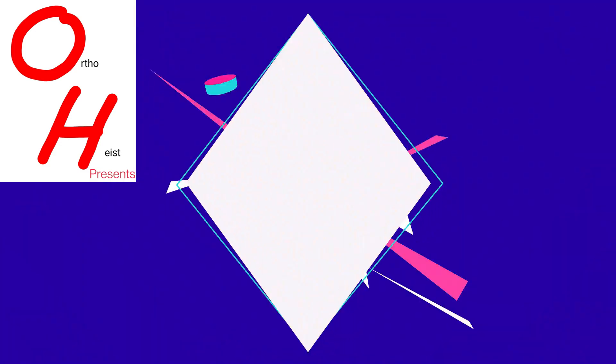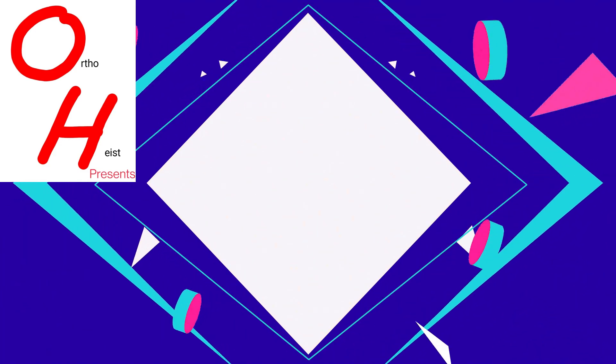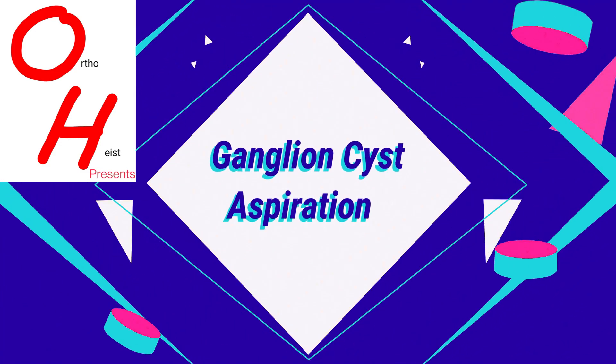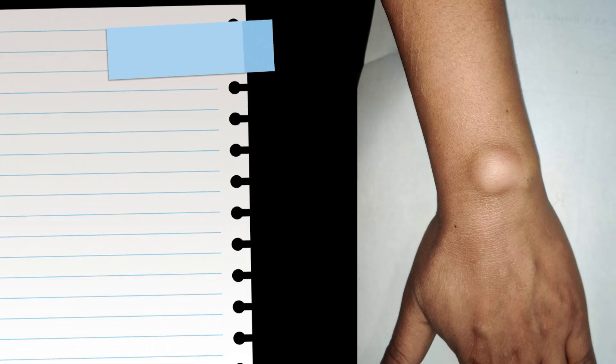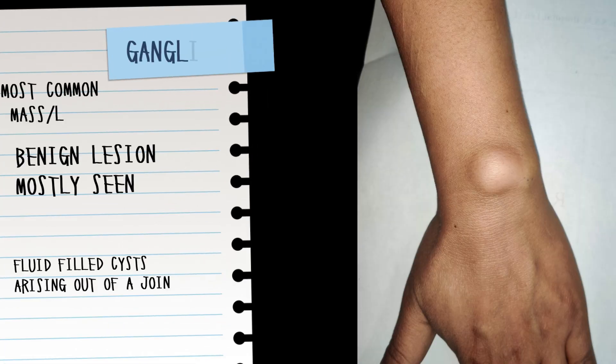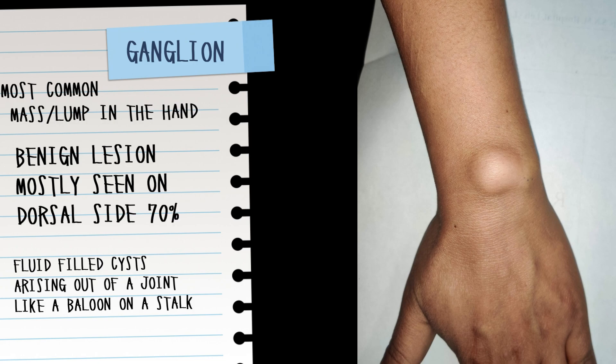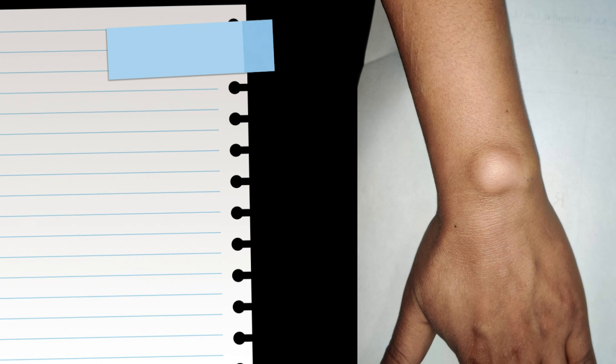Welcome. Today we are going to learn how to perform aspiration of a ganglion cyst. Ganglion cyst is one of the most common soft tissue swellings seen in the hand, most commonly seen on the dorsal side of the wrist in around 70% of patients. These are fluid-filled cysts which arise out of a joint like a balloon on a stalk.